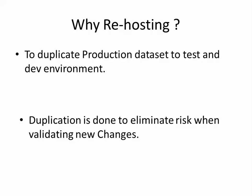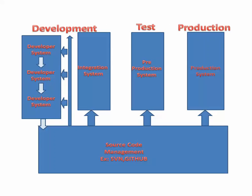Next, let's have a quick overview of our architecture. So here you can see we have a development, performance test, and production environment. The developers develop the program, check in the code, which is maintained by source control management — for example, GitHub. We check into the integration system where initial smoke testing is done, then it's deployed to test where complete validation takes place, and finally production comes into the picture.